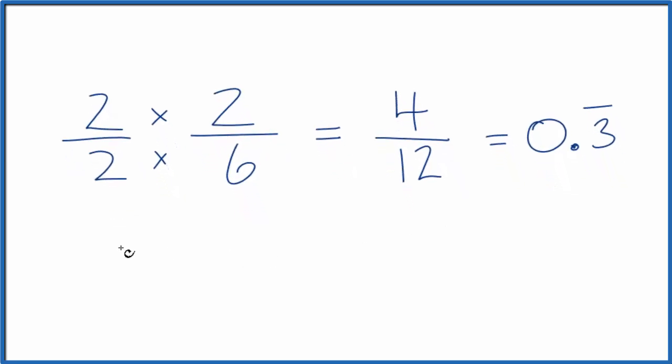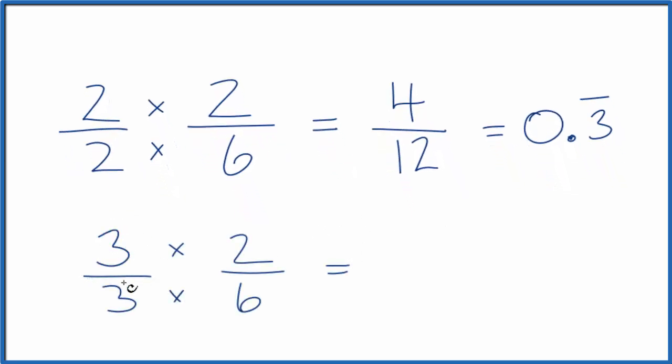Let's do another one. How about 3 over 3? Again, 3 divided by 3 is 1. We're not changing the value. 3 times 2, though, that gives us 6. 3 times 6, that gives us 18. And that is an equivalent fraction to 2/6. The decimal, 0.3, and the 3 repeats.